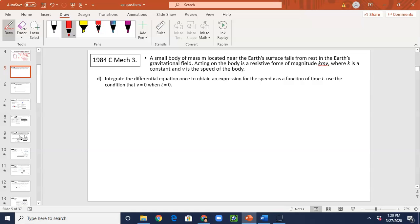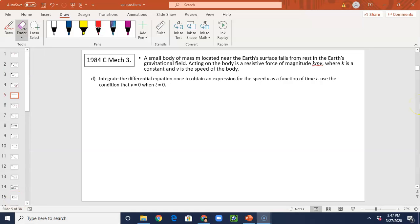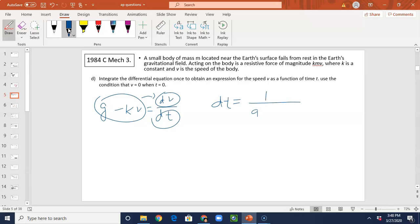So let's go back to our differential equation, which is G minus KV equals to DV over DT. I'm going to switch it around. I'm going to combine all the terms with V with DV and move DT to the other side. So I ended up with DT equals to 1 over G minus KV DV.